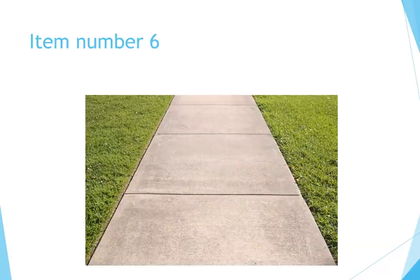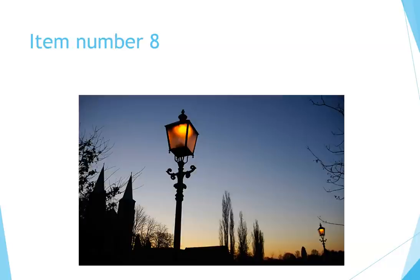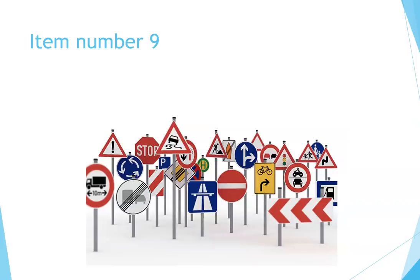Item number six: sidewalk. Item number seven: intersection. Item number eight: street light. Item number nine: street sign or street signs — actually, you will never see all of these street signs together in one place.